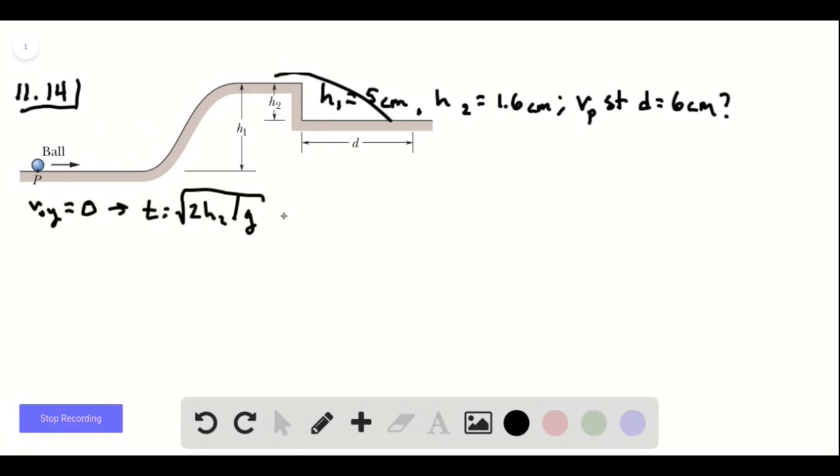Then using another of our projectile motion equations, we're going to get that V squared will be G D squared over 2H2.